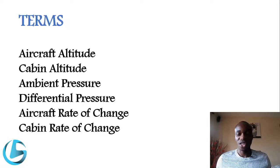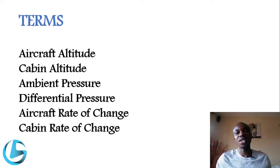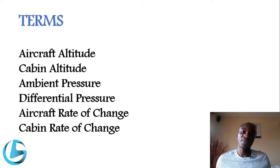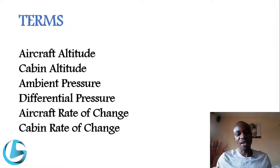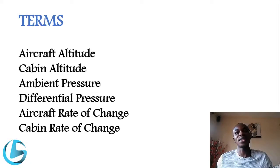The aircraft rate of change is the rate of change of altitude of an aircraft — the rate at which it is climbing or descending. The cabin rate of change is the rate at which the pressure inside the aircraft cabin is changing, for example 500 feet per minute climbing or 300 feet per minute descending.